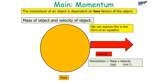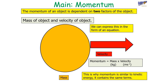The momentum of an object is dependent on two factors: the mass of the object and the velocity of the object. Momentum is equal to mass times velocity. Momentum is similar to kinetic energy as it contains the same terms — momentum is mass times velocity, whilst kinetic energy is one half times mass times velocity squared.